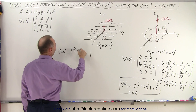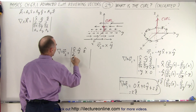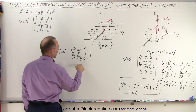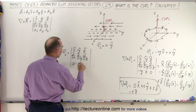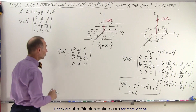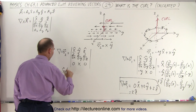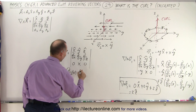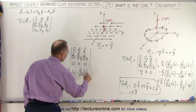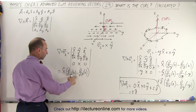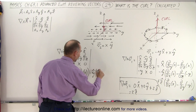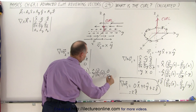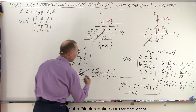For V2, the determinant has x, y, z unit vectors; partials with respect to x, y, z; and the components 0, x, and 0. The x unit vector term gives the partial with respect to y of 0, minus the partial with respect to z of x — equal to 0. Minus the y unit vector times the partial with respect to x of 0, minus the partial with respect to z of 0 — also equal to 0.